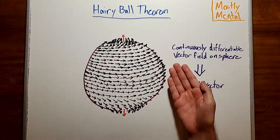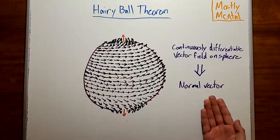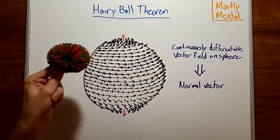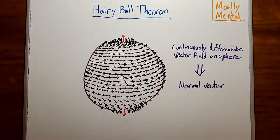Putting this in more mathematical language, any vector field on a sphere that's continuously differentiable will have a normal vector somewhere, that is, a vector perpendicular to its surface. Now, there may be more than one, here we have two, and it's possible you could have infinitely many, but there's always going to be at least one normal vector.